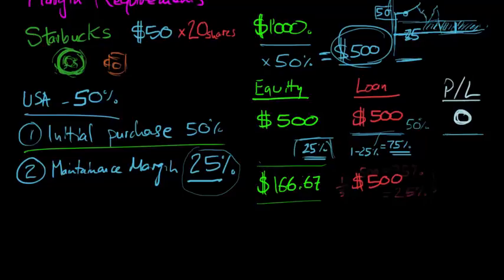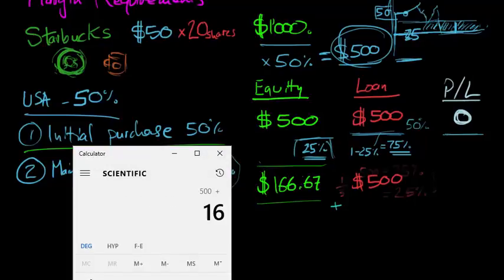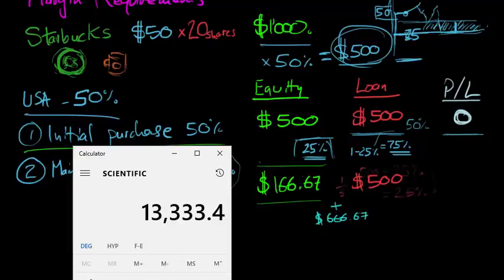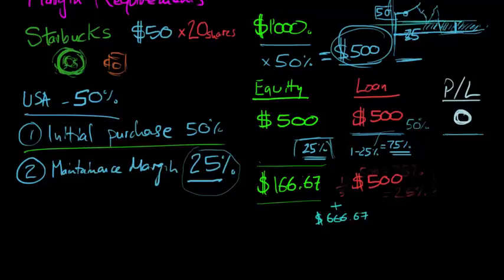The combination, the value will be the sum of the two, which is 500 plus 166.67, will be $666.67. That will be the value of the position. Divided by 20 shares means that the price level it would have to decline to will be $33.33.